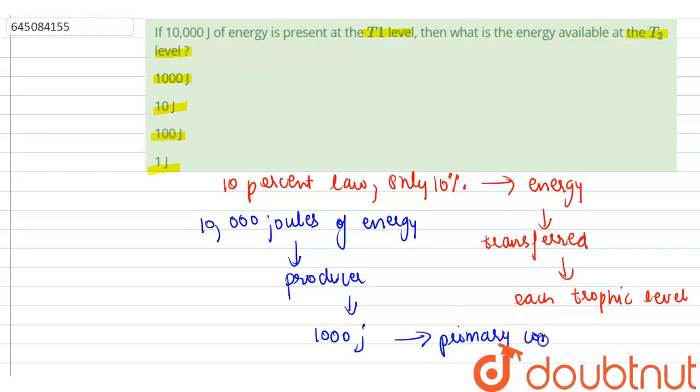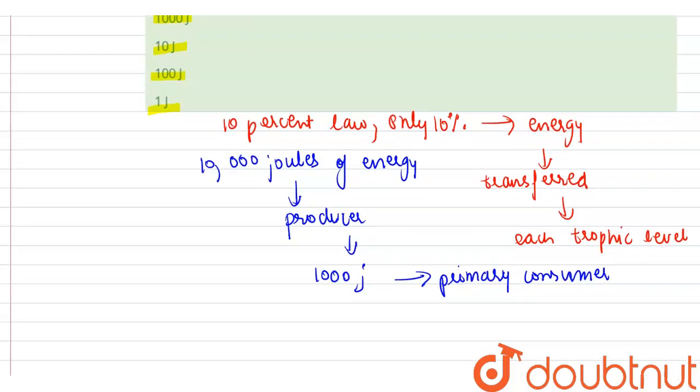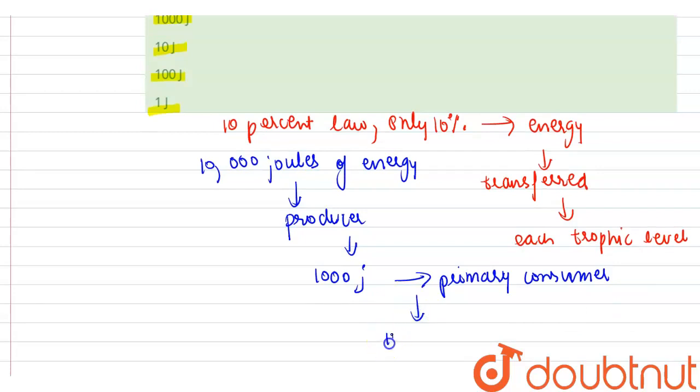And only 100 joules of energy is available to the next trophic level, to the secondary consumer.